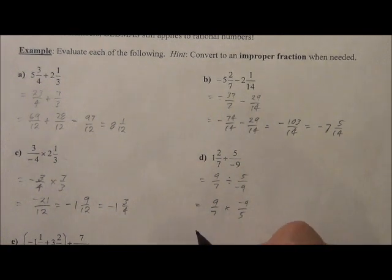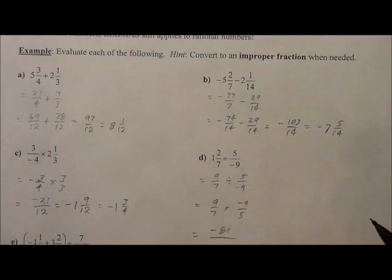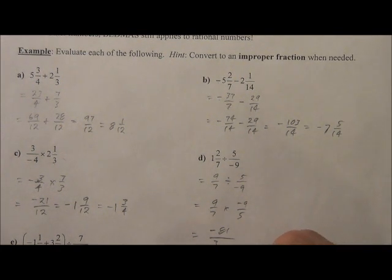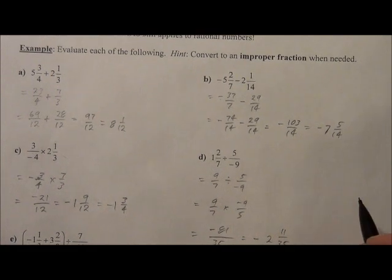Now we just multiply straight across, because we don't need common denominators. So 9 times negative 9 is negative 81, and 7 times 5 is 35. So we get negative, that goes in there twice. 2 and 11 thirty-fifths, if that's correct.